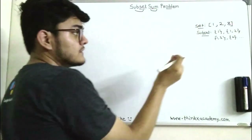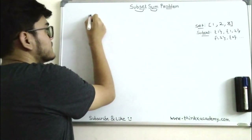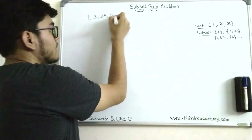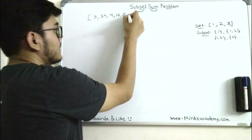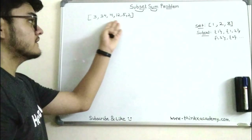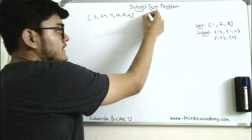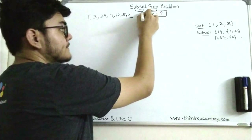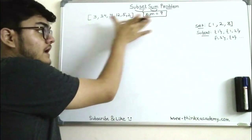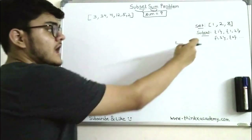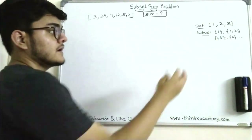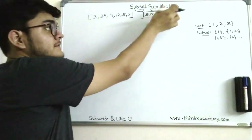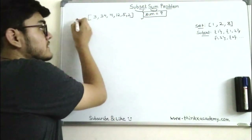We will take a set of integers and we will be given a set and a number, which we call sum. Let's choose nine as a random number. In this problem you are given a set and a number, sum, and you have to pick up those subsets such that if you add all the elements of a subset it will give you the sum. That's why this problem is known as the Subset Sum problem.